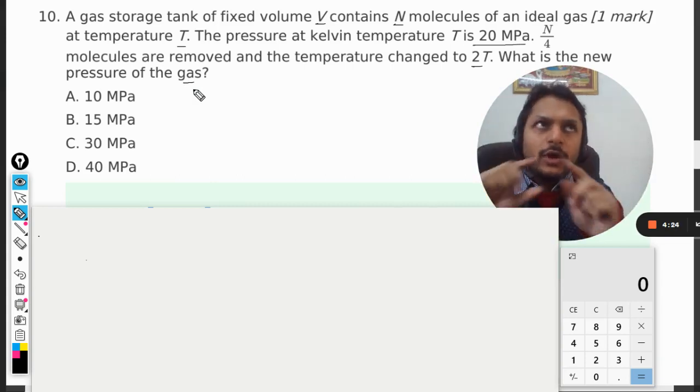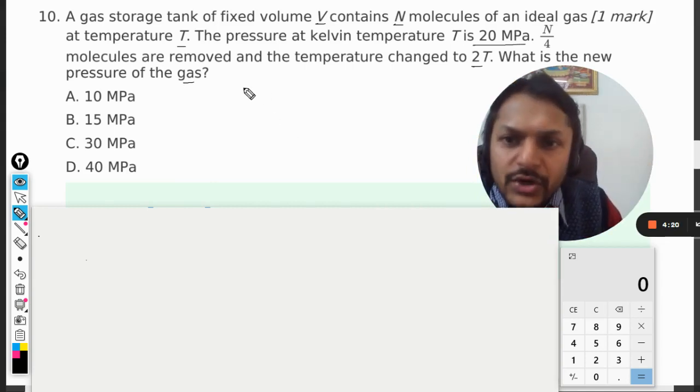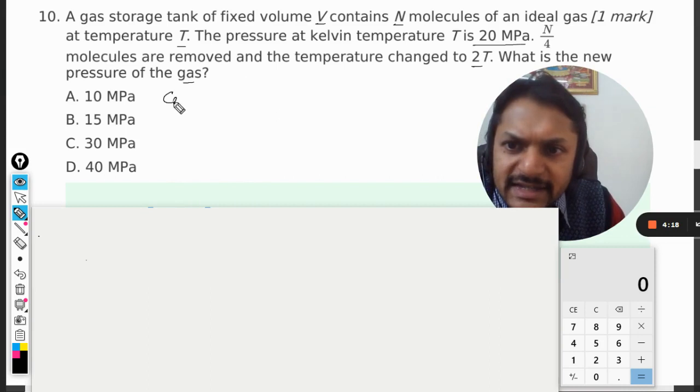First of all, we are talking about the ideal gas. So whenever we talk about ideal gas, the first thing that comes to our mind is the ideal gas equation. So there are two cases. I'll write Case 1: PV = nRT.